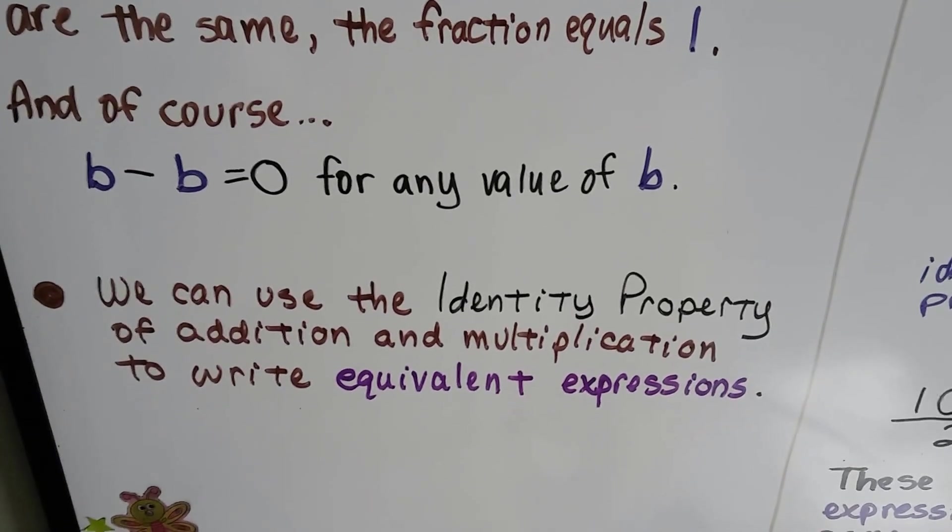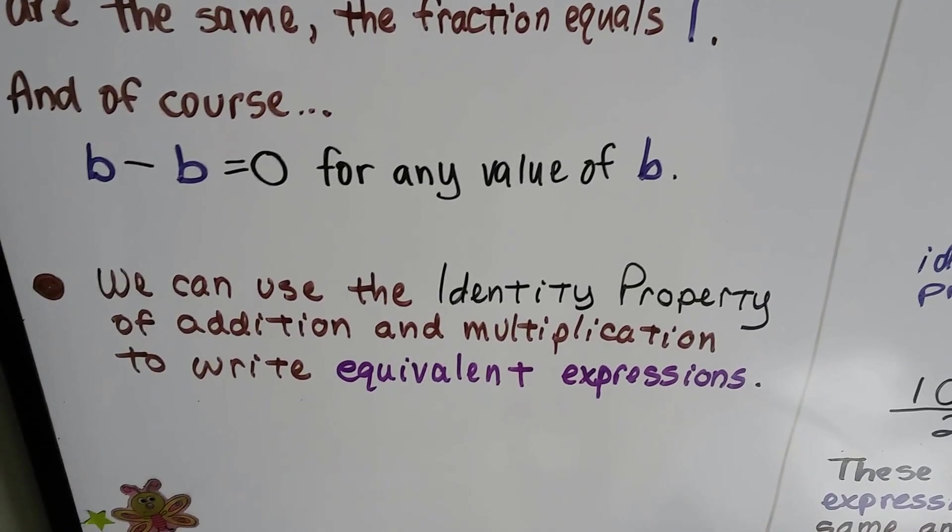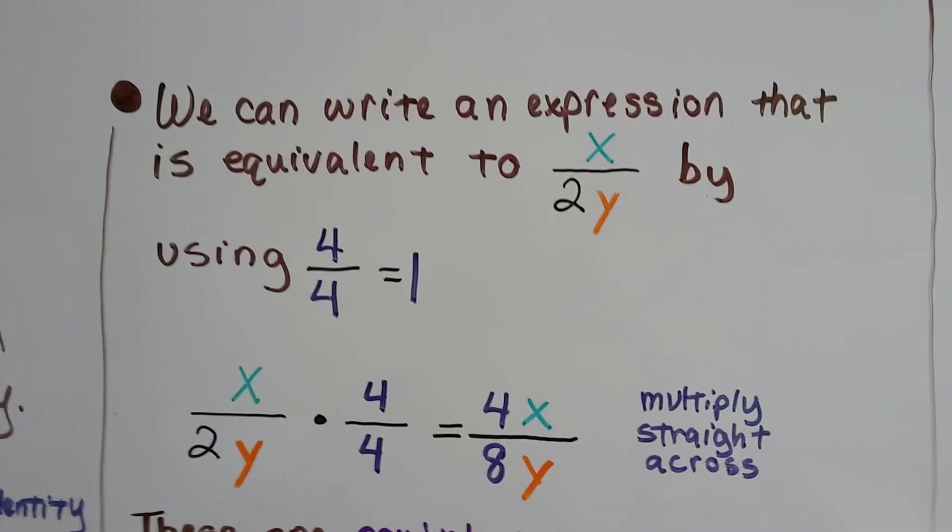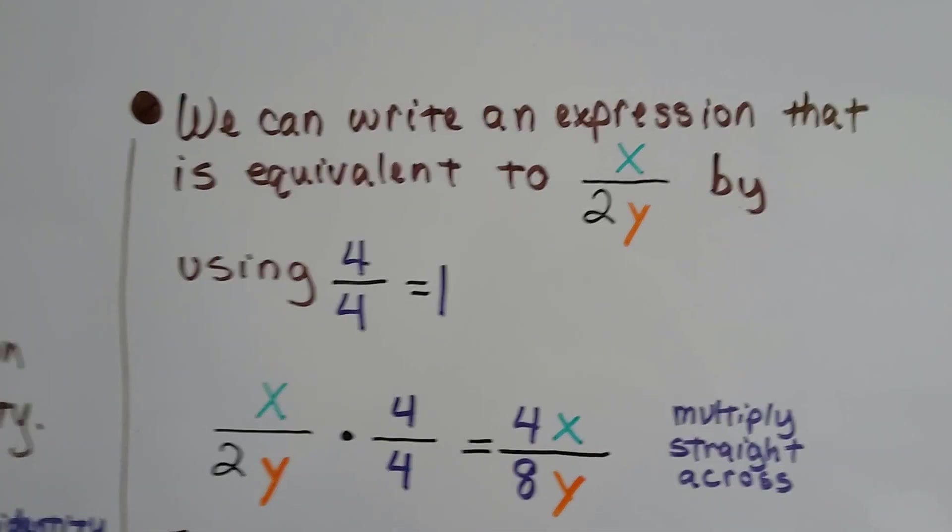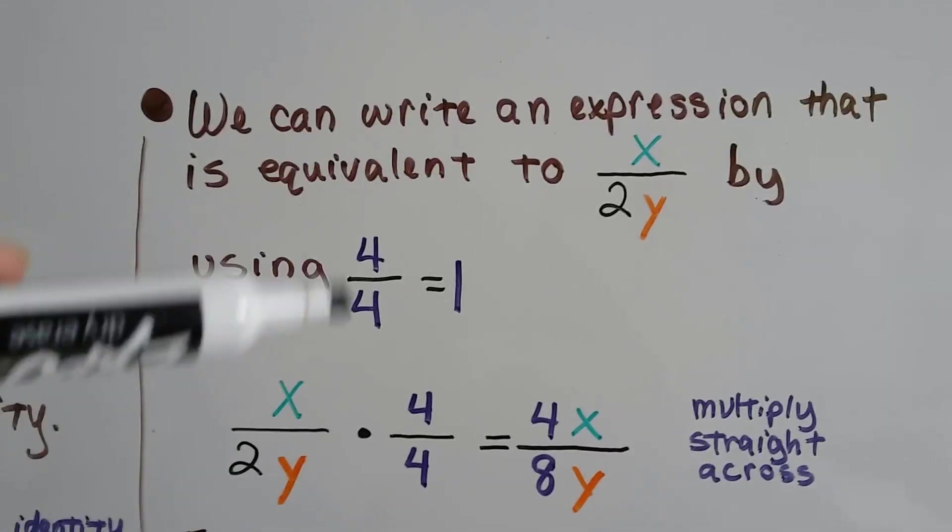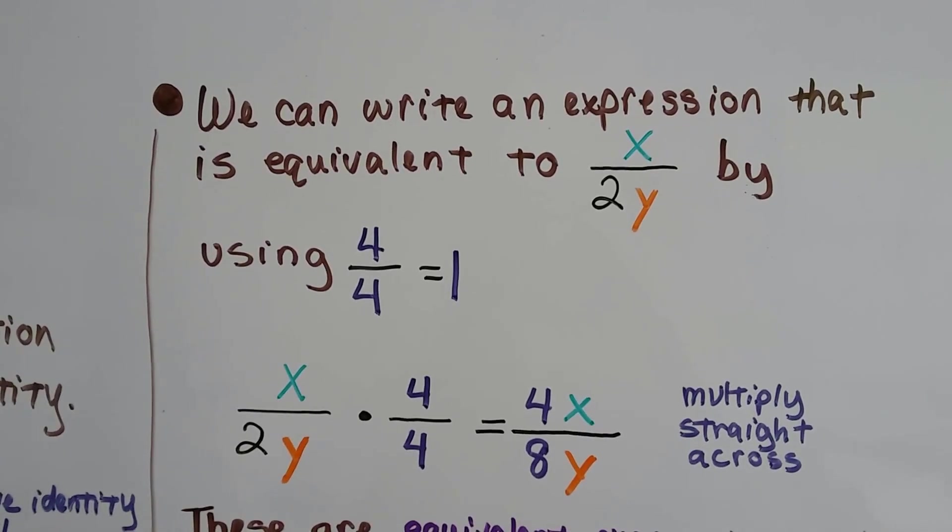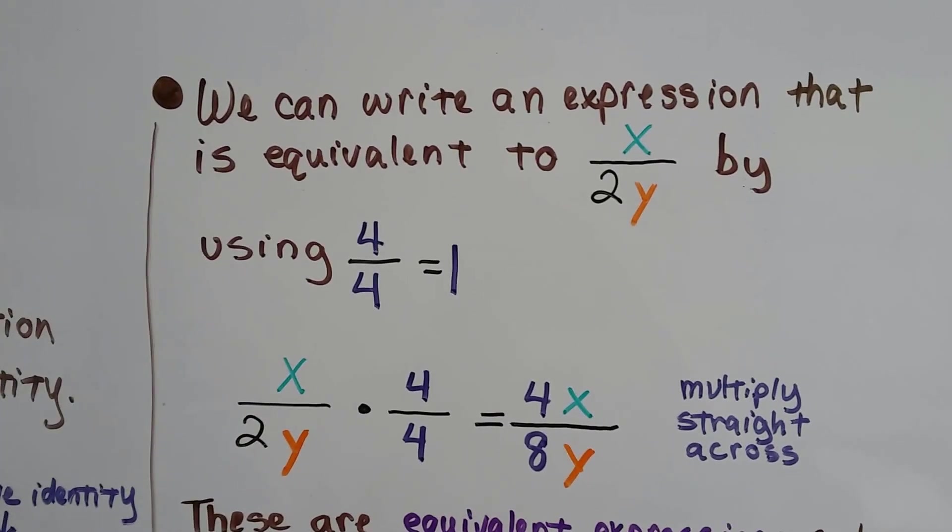We can use the identity property of addition and multiplication to write equivalent expressions. We can write an expression equivalent to x divided by 2y by using an identical numerator and denominator. We can use 4 over 4, 5 over 5, 2 over 2, it doesn't matter. We could use 143 over 143 if we wanted to.